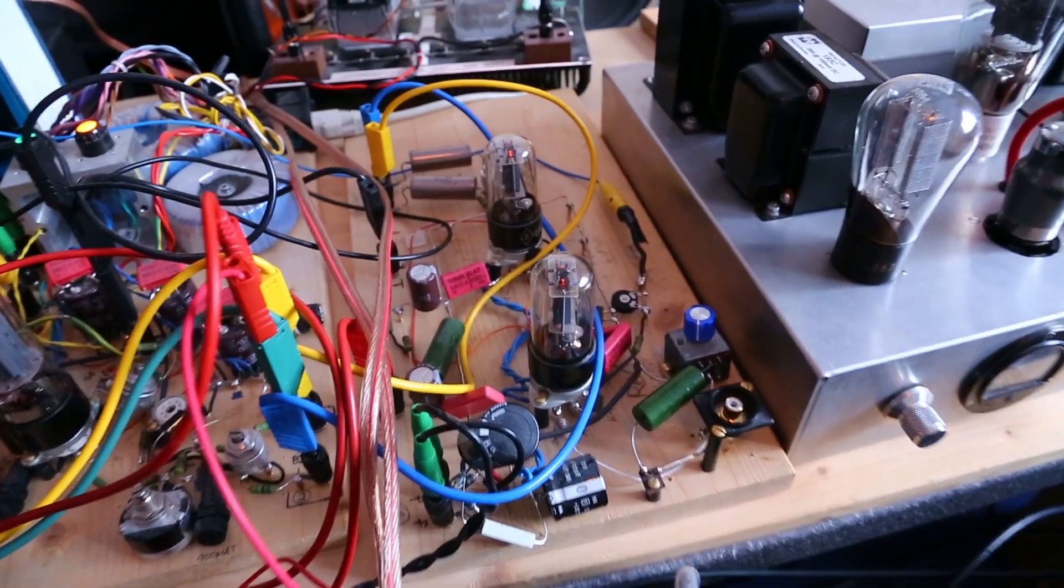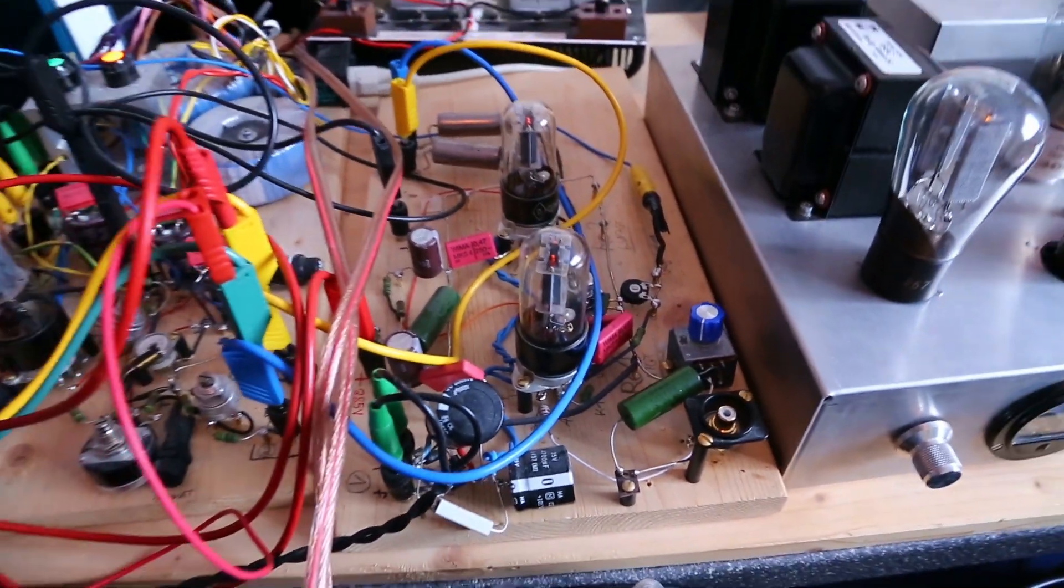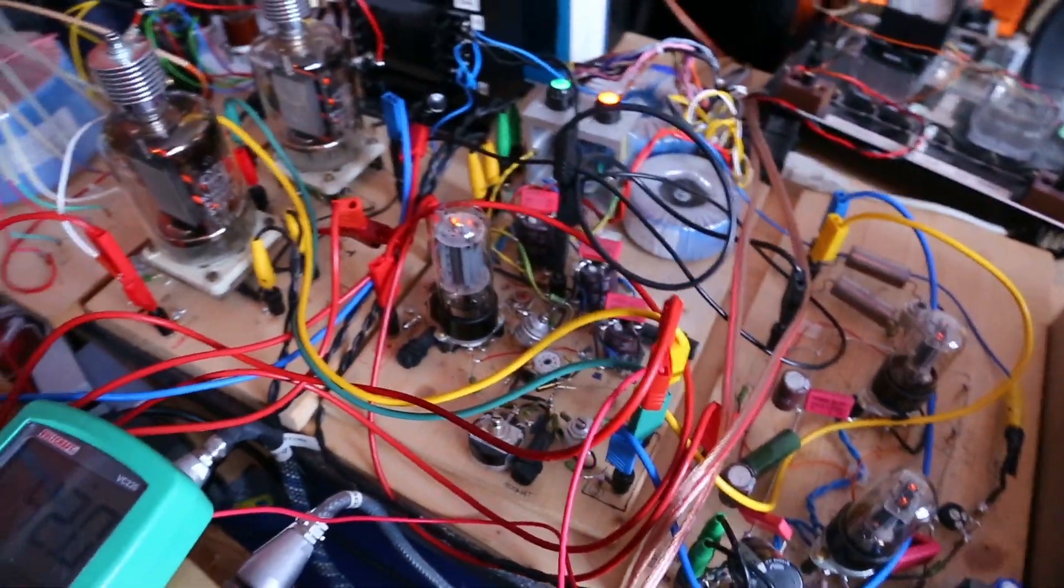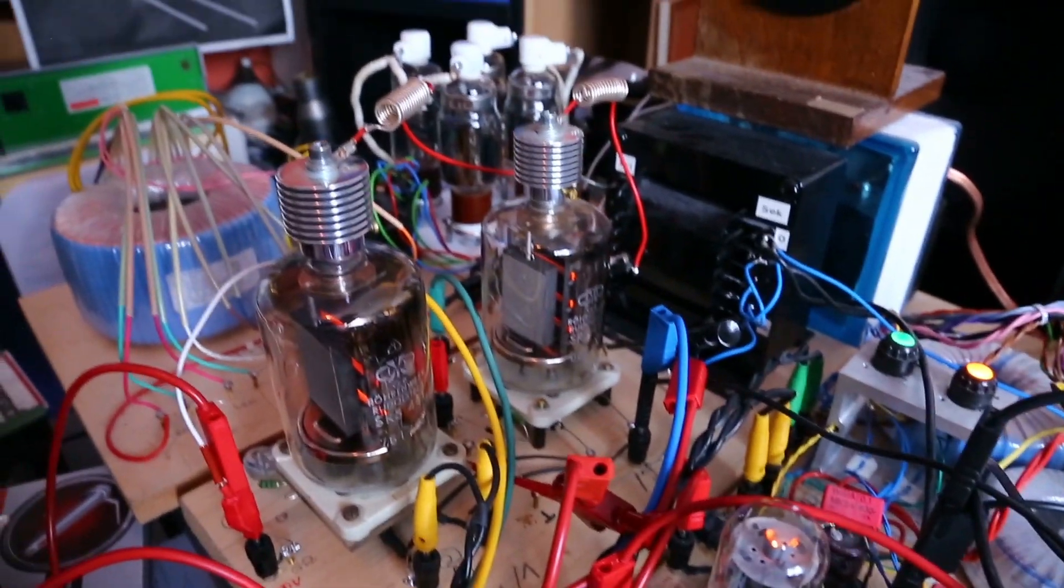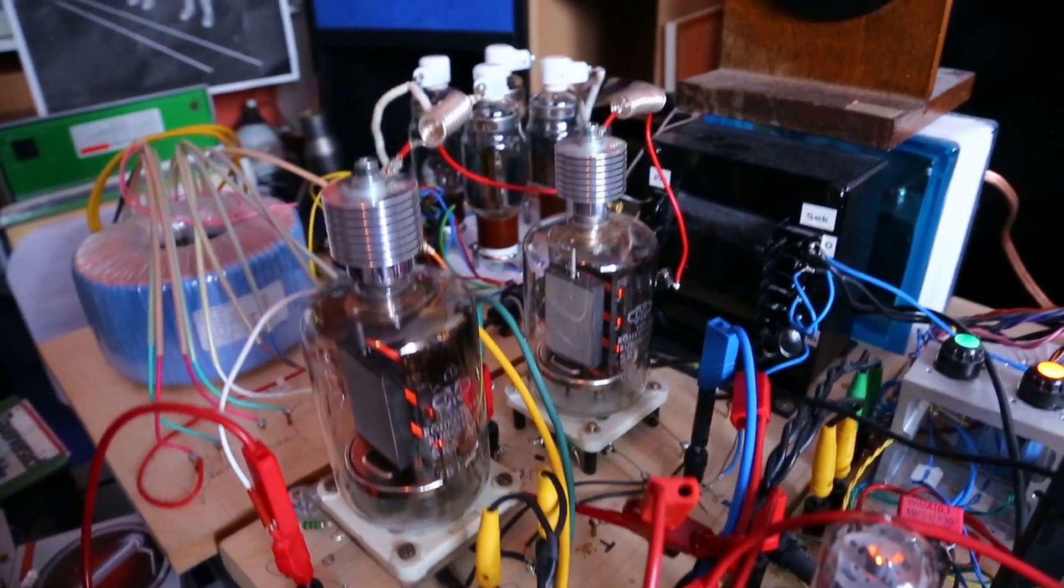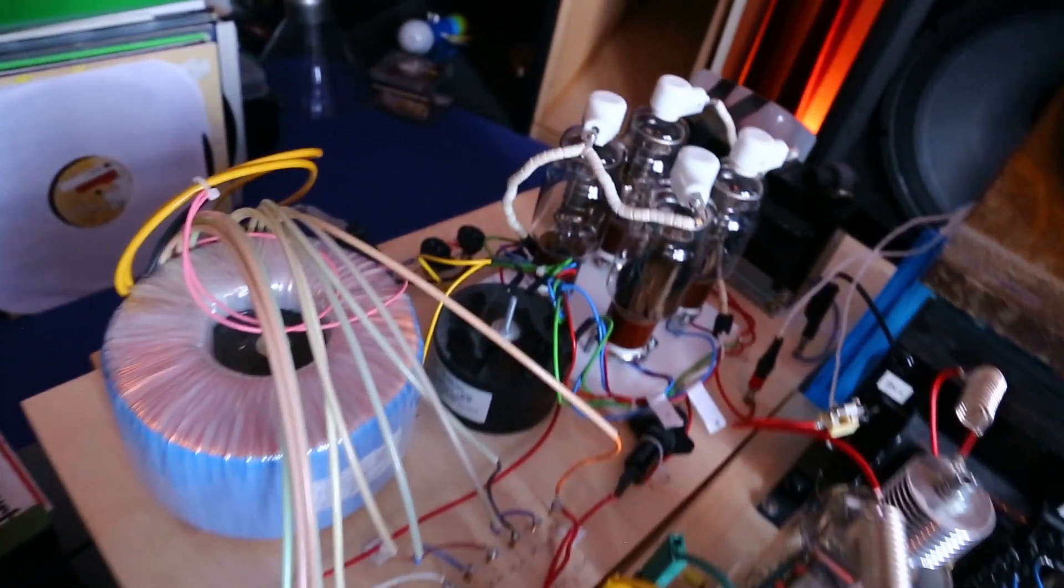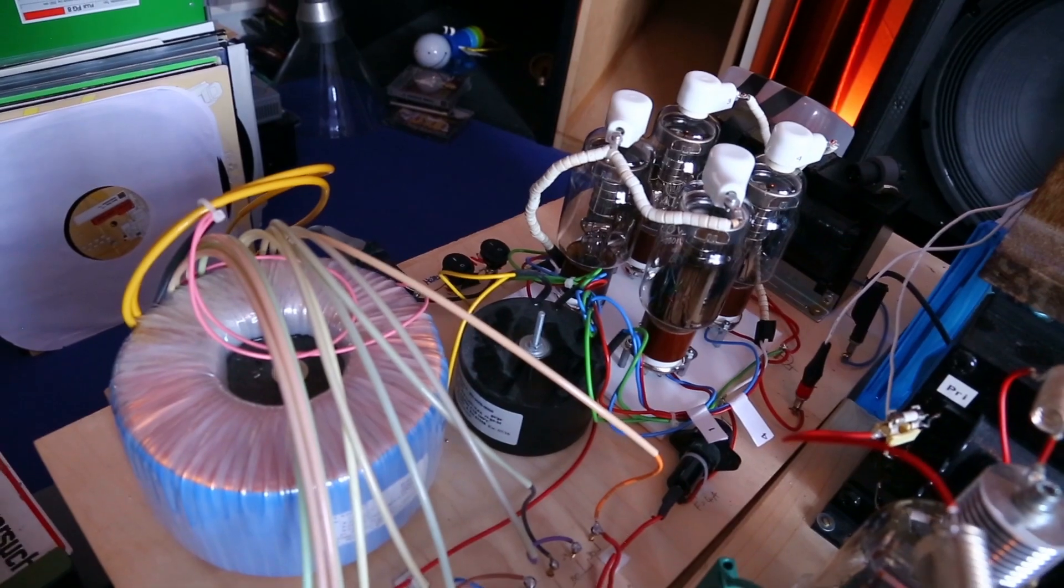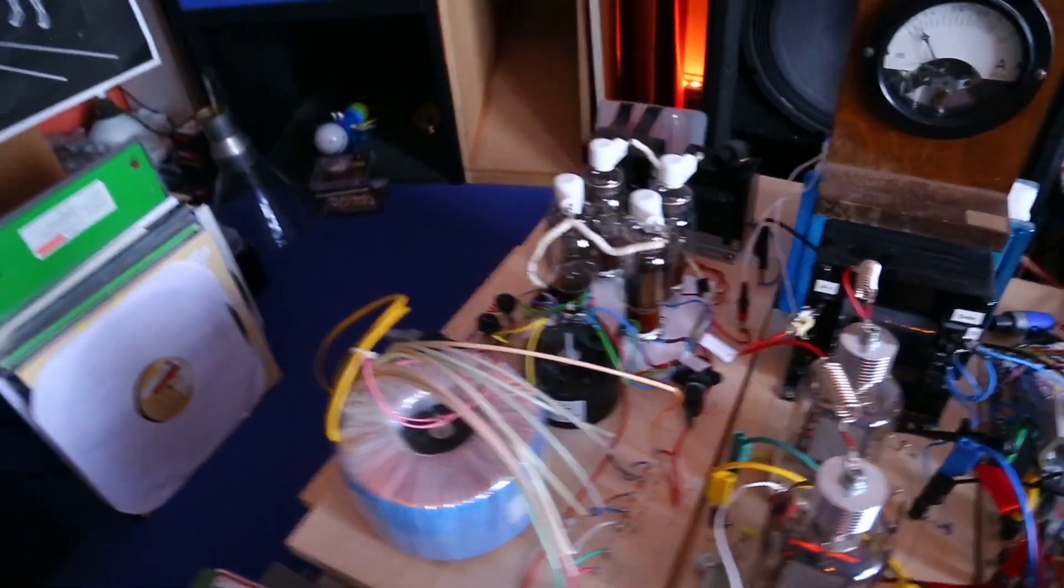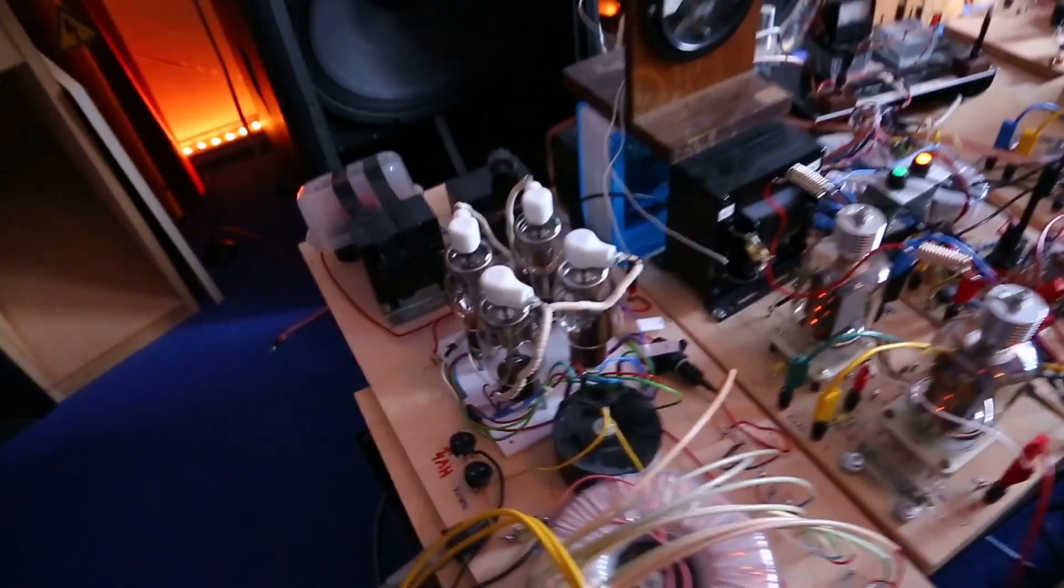Here you can see the pre-amplifier stage. Here we have the power supply. The final stage. And the power supply for the high voltage. Not with mercury vapor rectifiers. Here are xenon rectifiers. These are DCX types.